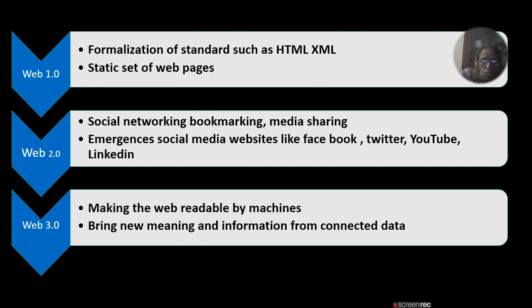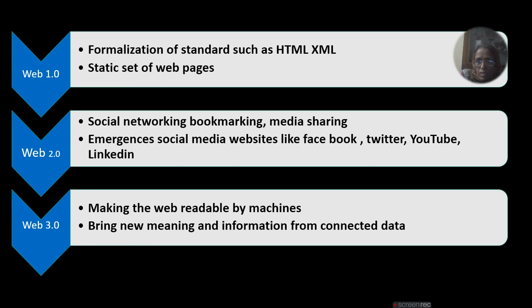Web 1 came first, with the formalization of standards such as HTML and XML and a static set of web pages. After that, Web 2 brought social networking, bookmarking, media sharing, and the emergence of social media websites like Facebook, Twitter, YouTube, and LinkedIn — all part of Web 2's network marketing applications.